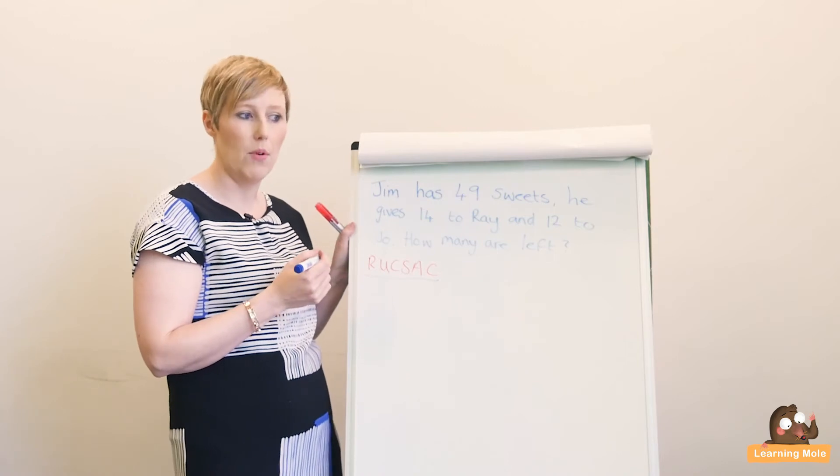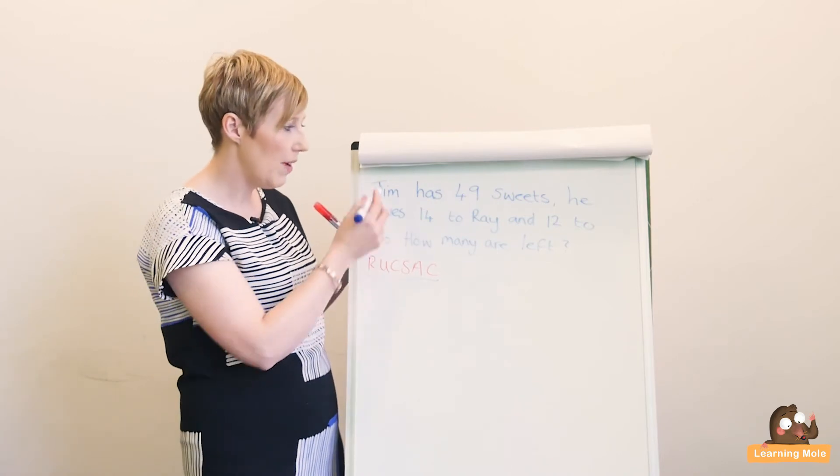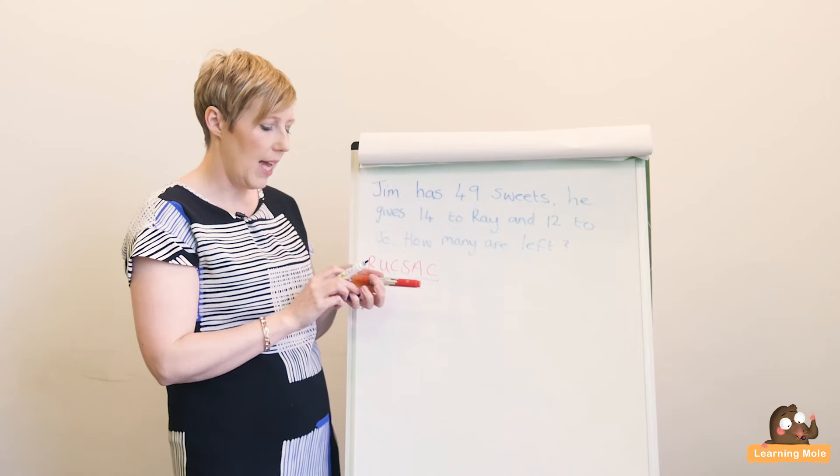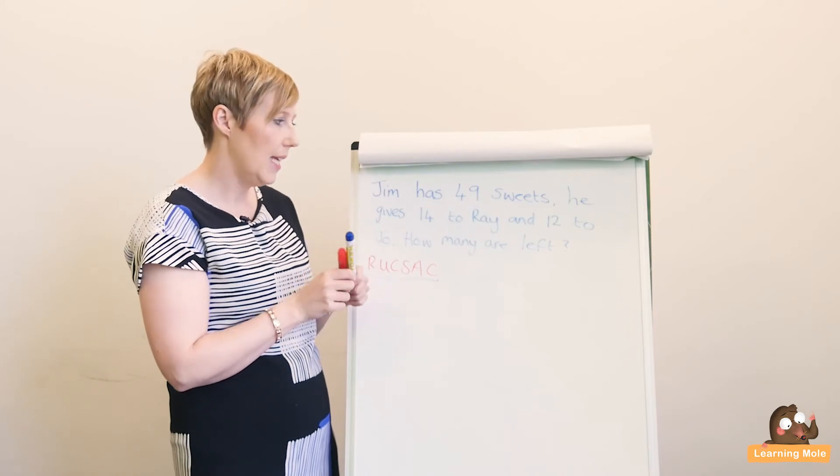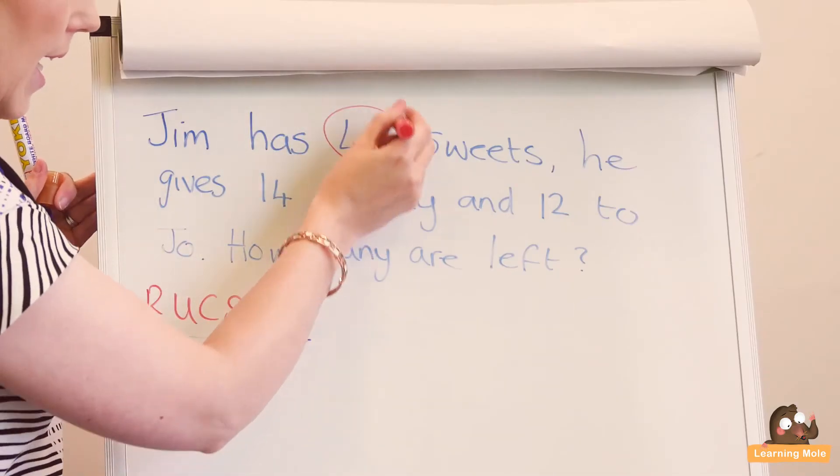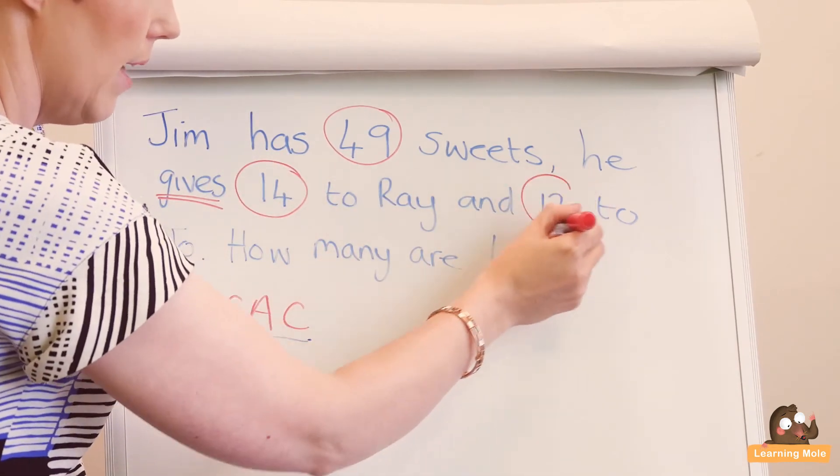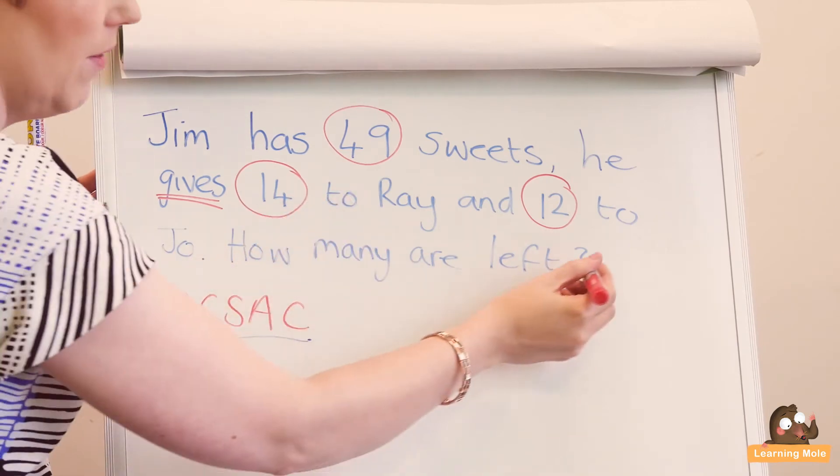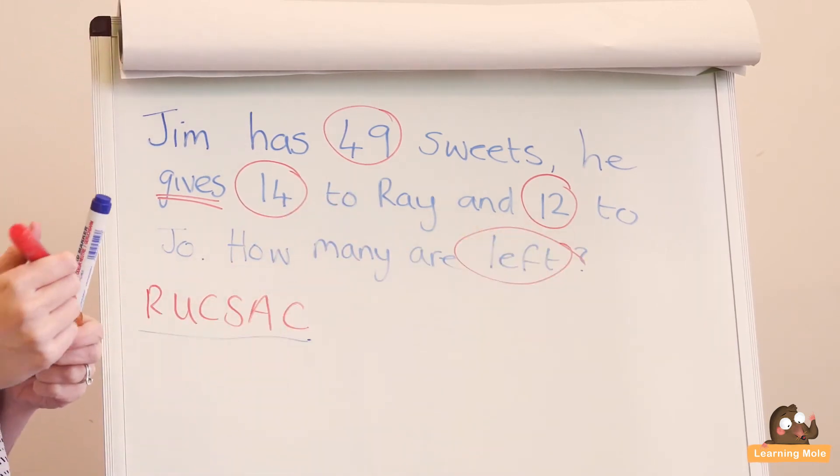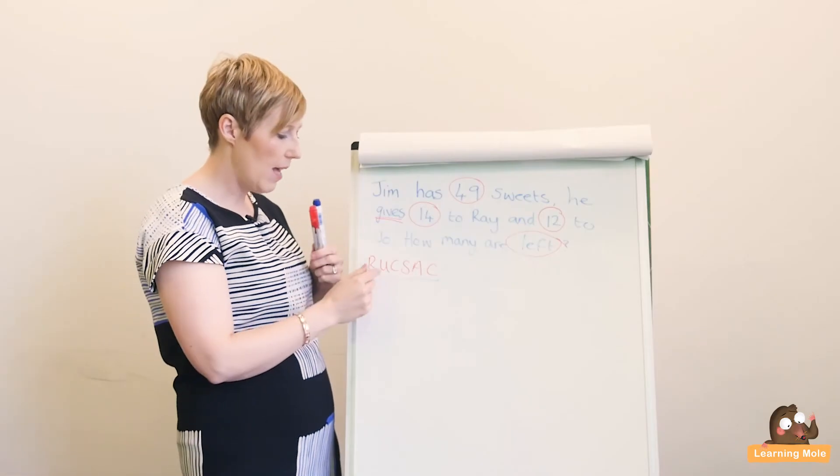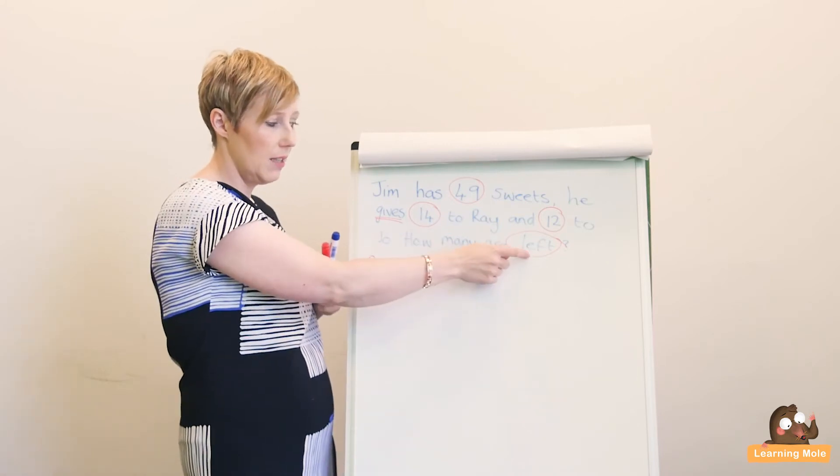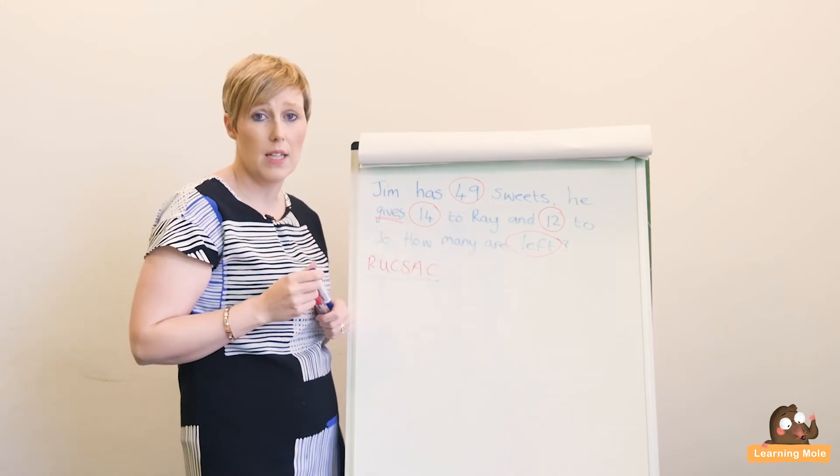Reading it, then understanding it. That's highlighting the key information. We know he's got 49, we know he gives 14 away and I would even underline that word 'gives.' He's got the 12, he gives them away, and then again we've got that 'left.' So we know now that it's actually taking away. We've read, we've understood, we're choosing the operation - 'left' tells us that it's a subtraction.